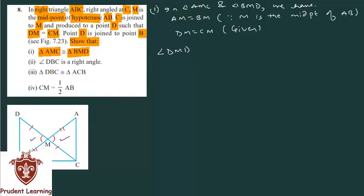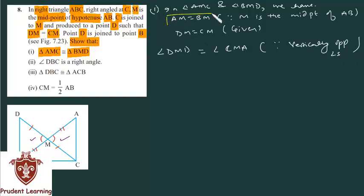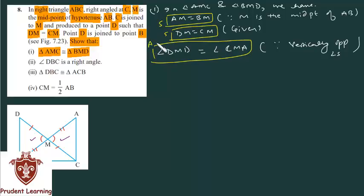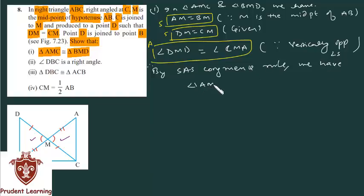Angle DMB is equal to angle CMA, as they are vertically opposite angles. So we have two sides and one included angle equal in both triangles. Therefore, by Side Angle Side congruence rule, triangle AMC is congruent with triangle BMD. Hence proved. The first part has been shown.